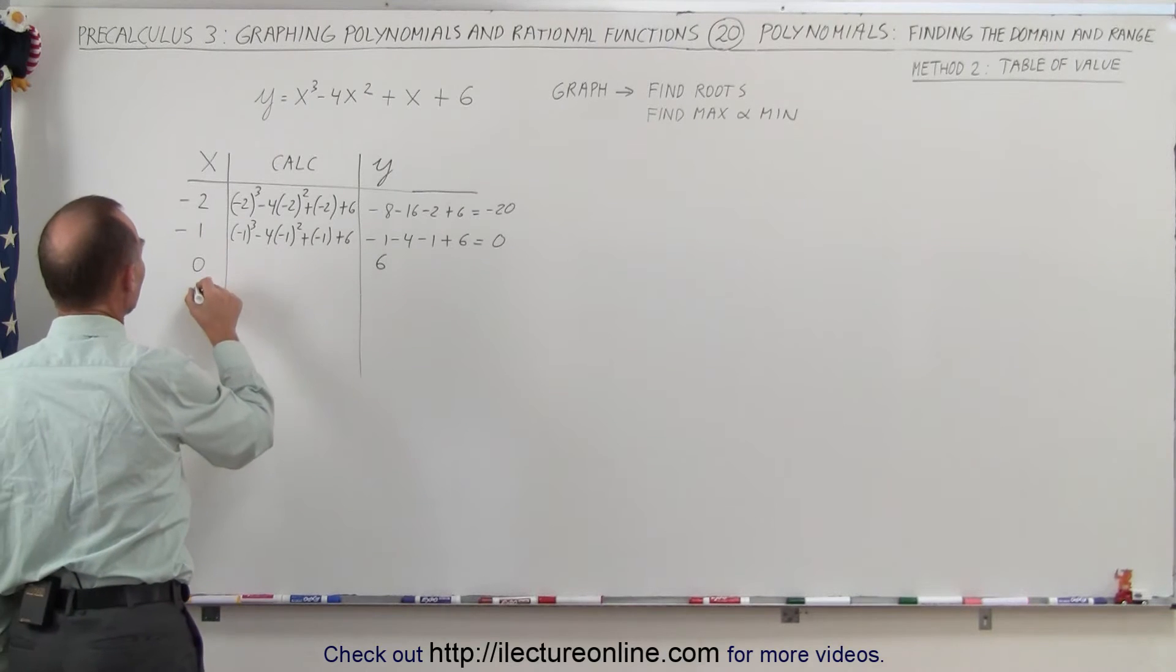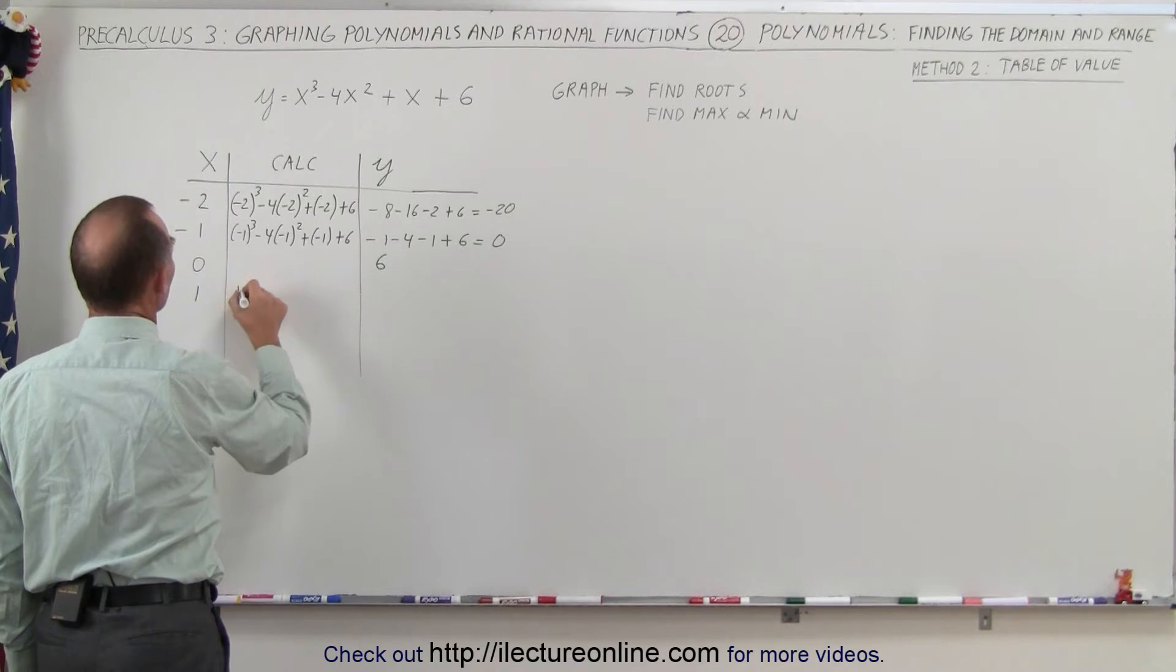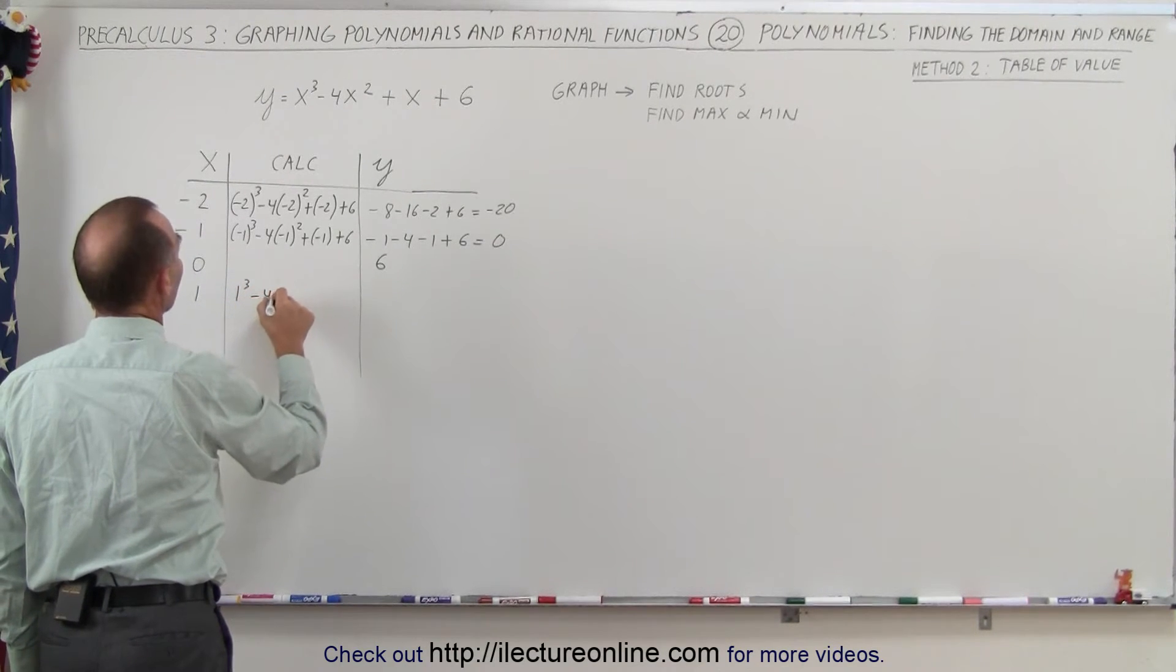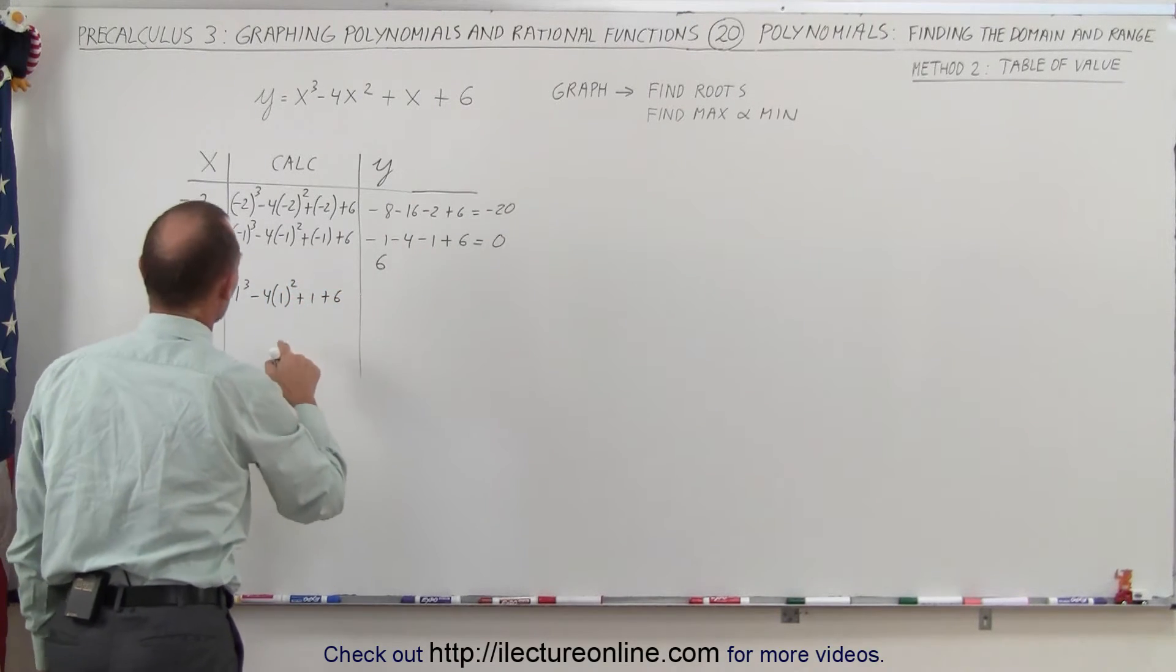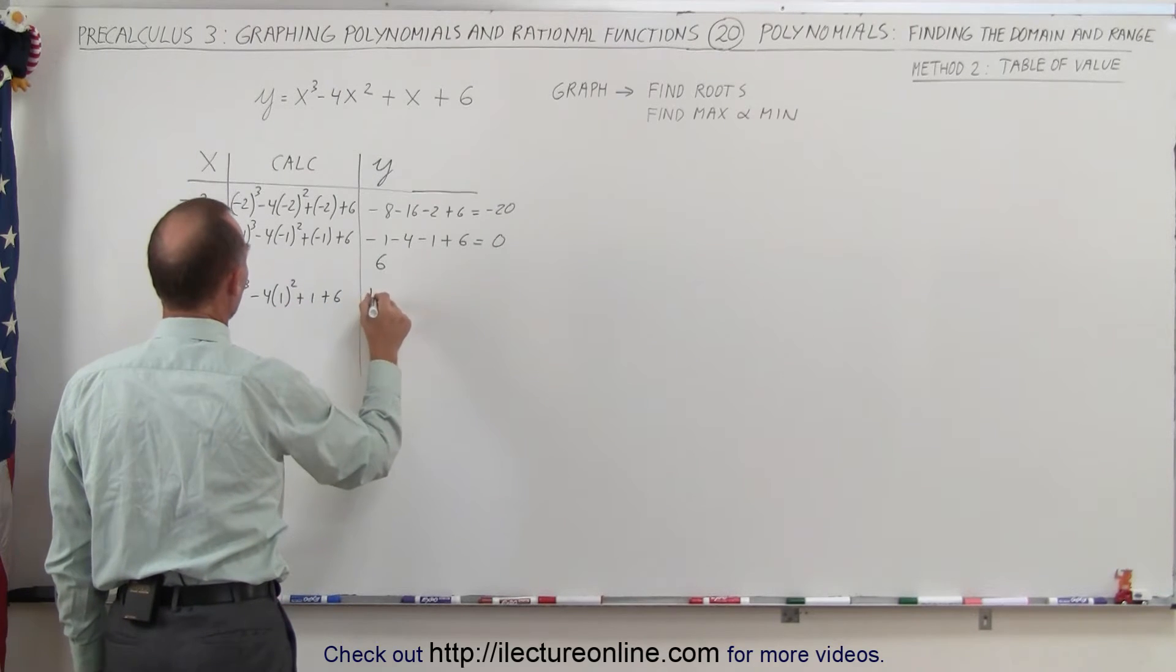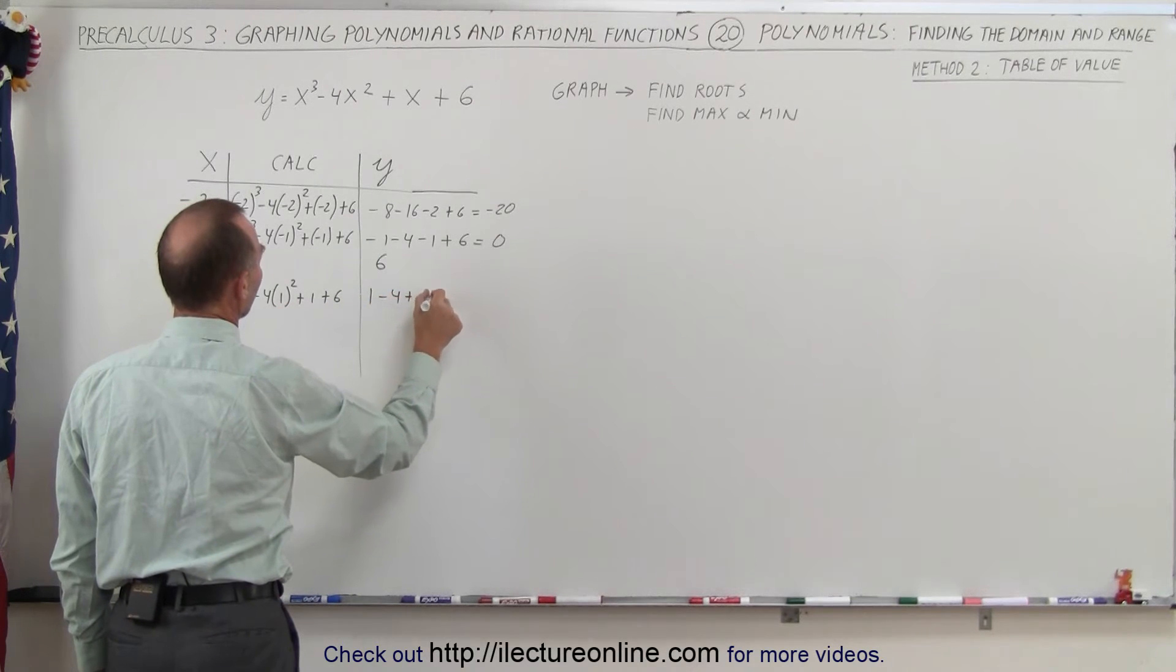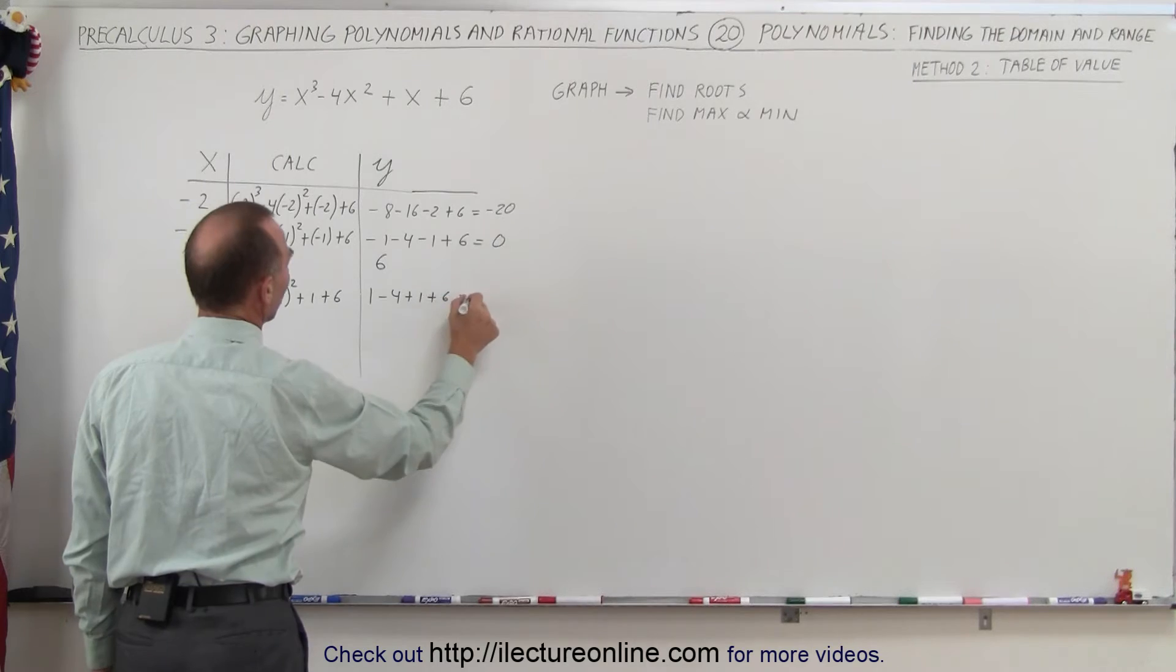Next we're going to try the value of 1. So we have 1 cubed minus 4 times 1 squared plus 1 plus 6. So that would be 1 minus 4 plus 1 plus 6. That would be 8 minus 4. That would be 4.